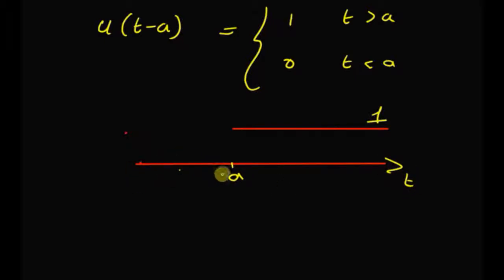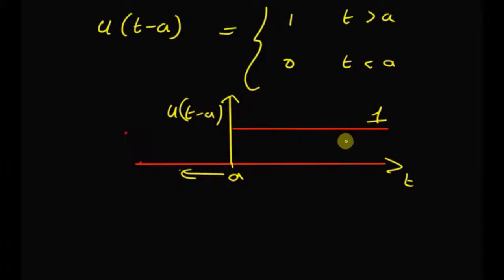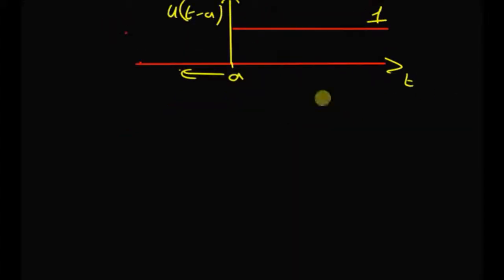For values of t less than a, the value of u of t minus a is 0, and for t greater than a, the function u of t minus a is equal to 1. Now, to find the Laplace transform of this function,